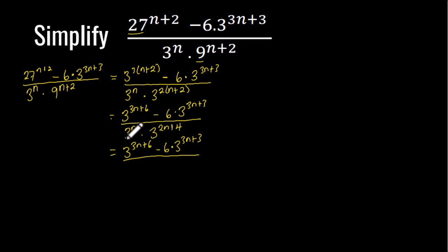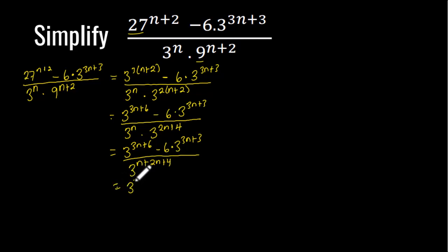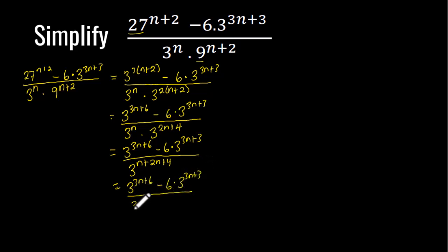Looking at the denominator, both terms have the same base. So according to the law of indices, the exponents must be added: 3 exponent n plus 3 exponent (2n+4) gives 3 exponent (3n+4). So we now have 3 exponent (3n+6) minus 6 times 3 exponent (3n+3), all divided by 3 exponent (3n+4).